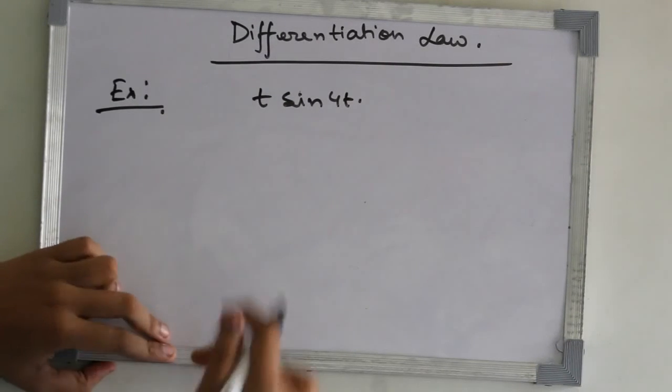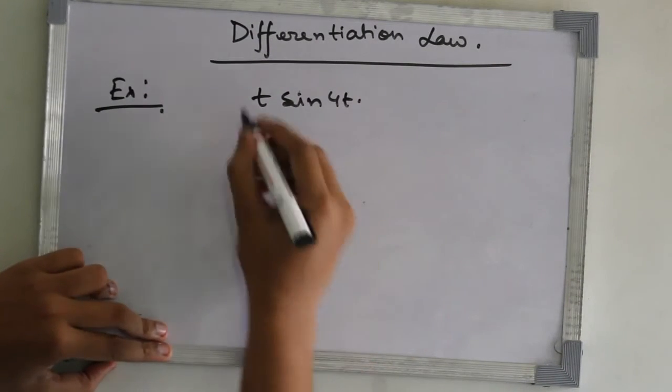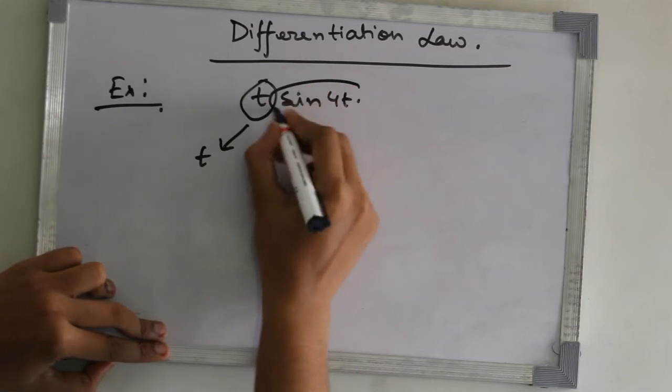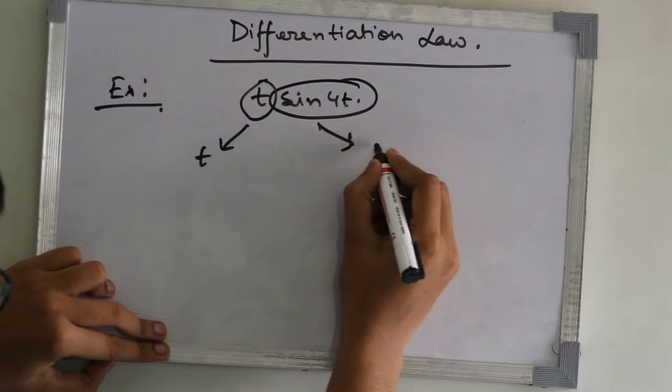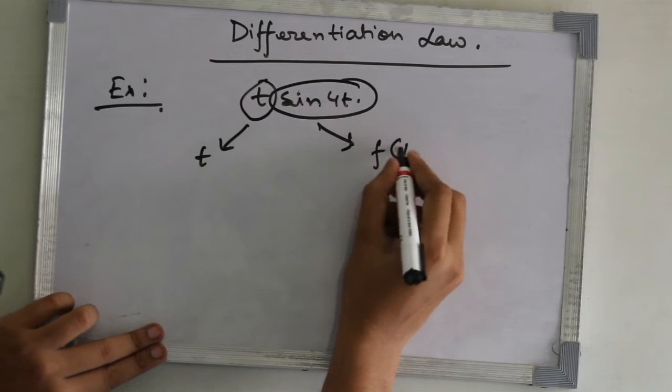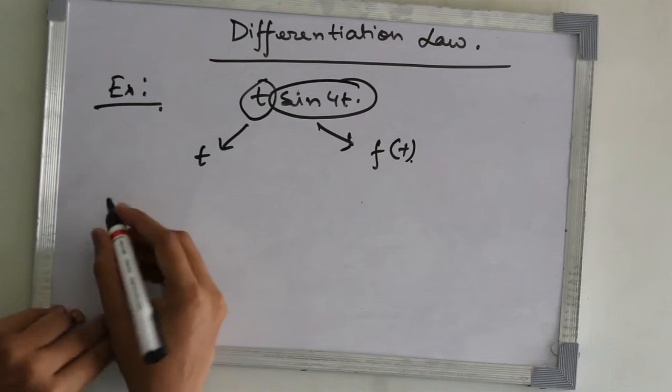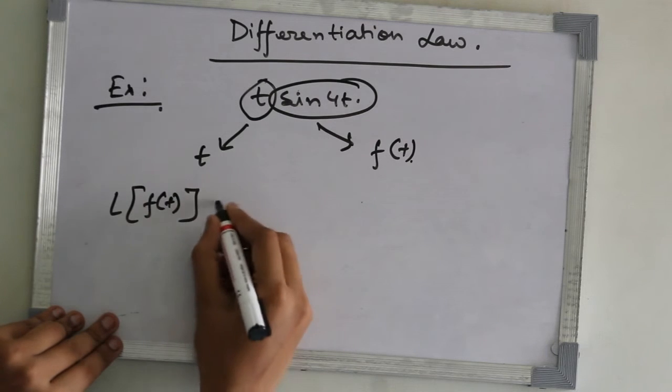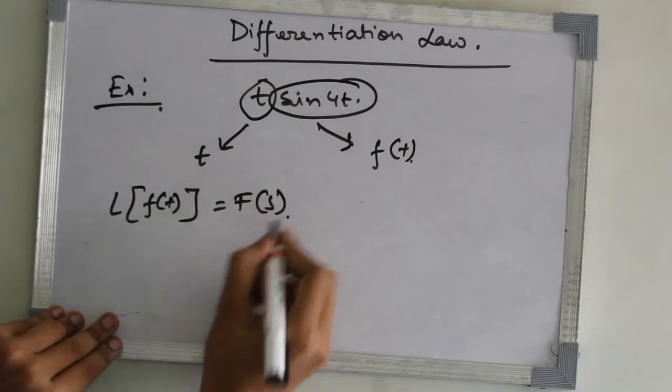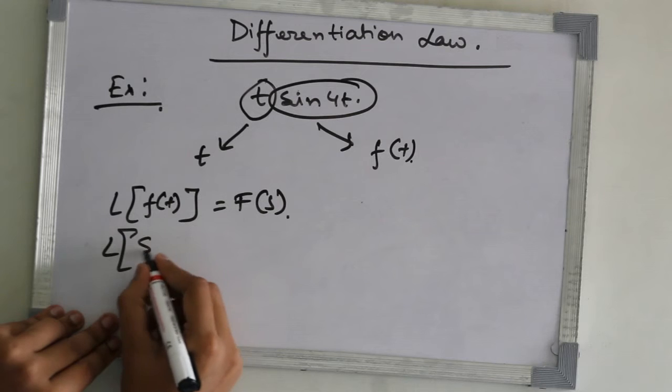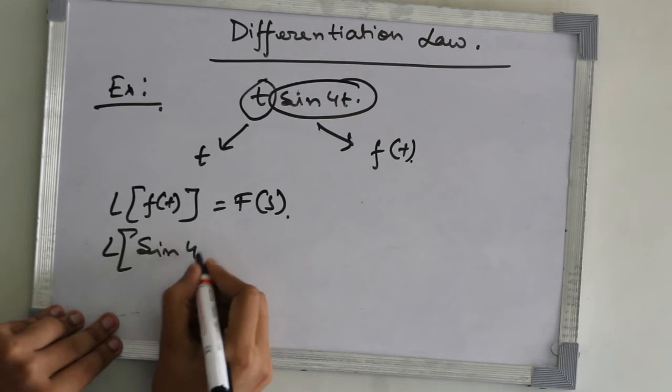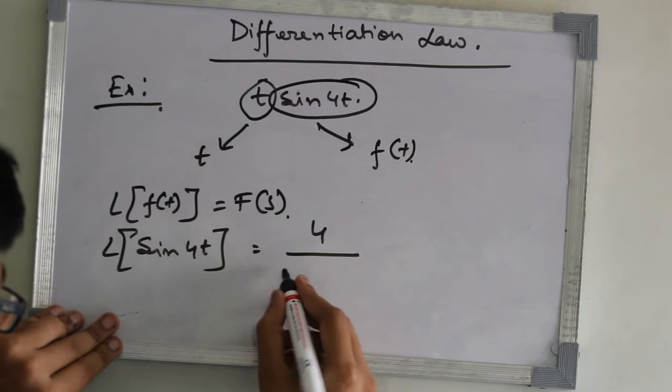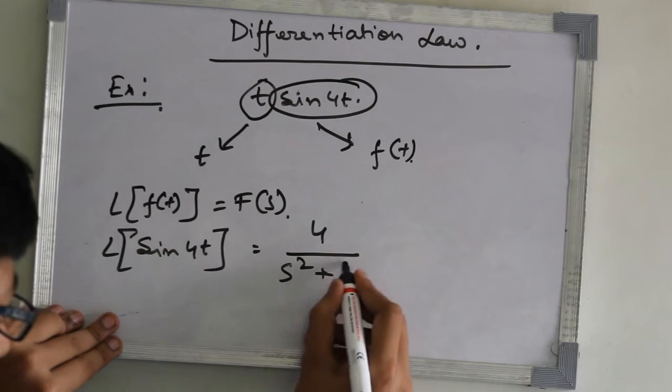So now, here this part is t and this part is f of t. L of f of t equals to F of s, we know that. So, L of sin 4t, this will be 4 upon s squared plus 16.